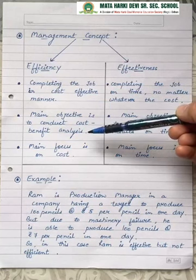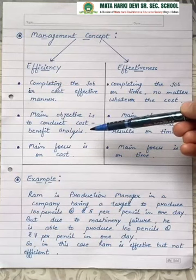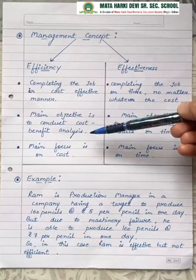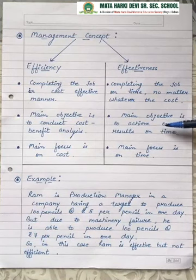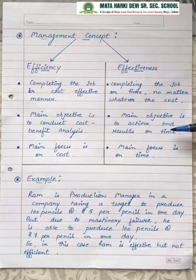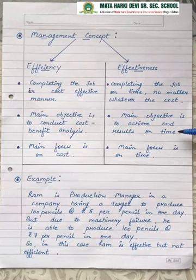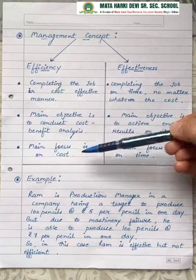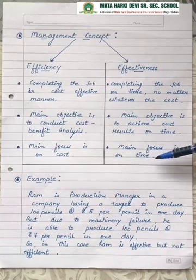You judge 2-3 options and choose according to the cost. In effectiveness, the main objective is to achieve end results in the proper time — if the target is one day, you complete it in one day; if it is two days, you complete it in two days. So the main focus in efficiency is on cost, while the main focus in effectiveness is on time.